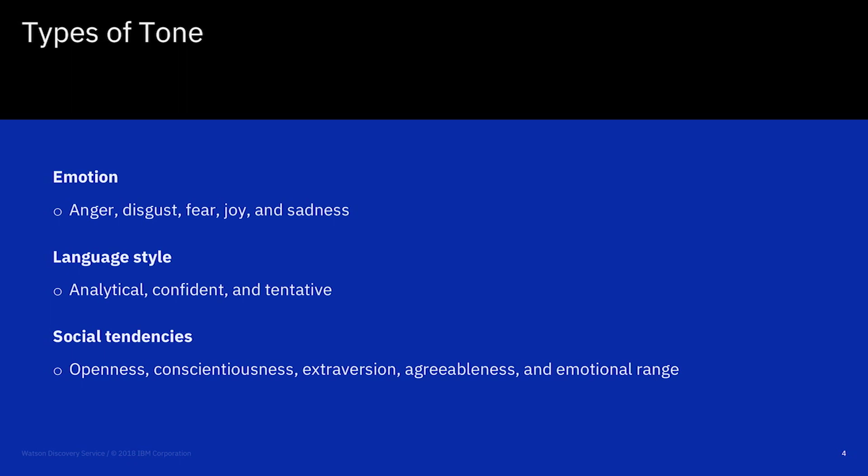The next form of analysis is language style. Language style will recognize three different writing styles: analytical, confident, and tentative. This could be useful in determining if one's writing style is appropriate given the intended audience.